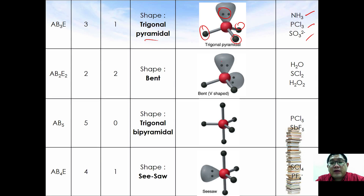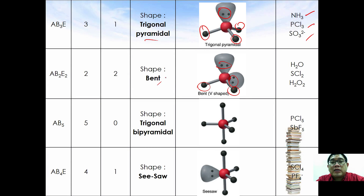If there are two lone pair electrons and two bond pairs, the arrangement is still similar to tetrahedral but the geometrical shape is bent. Examples are water, SCl2, and H2O2. These are all derivations from the tetrahedral structure.